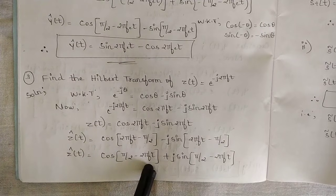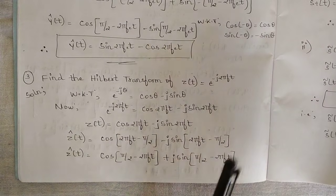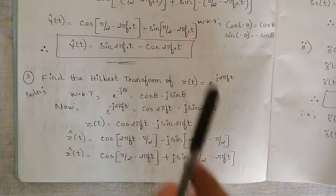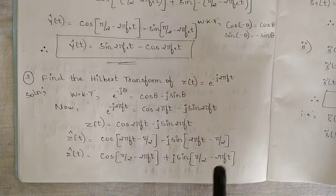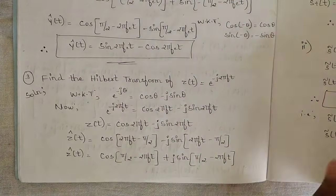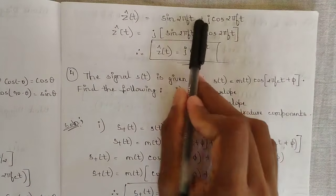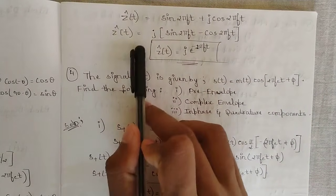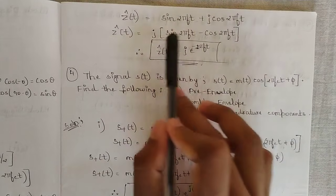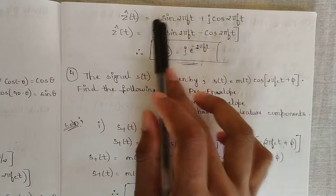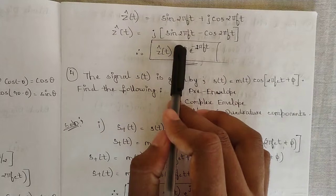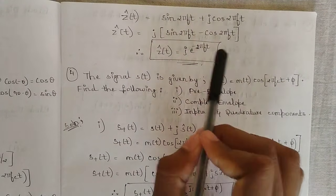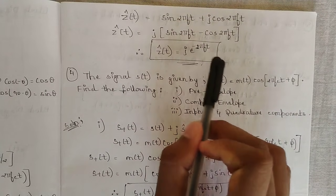The plus sign for the j-sin term arises because we have a minus sign outside and taking minus common gives minus × minus = plus. Applying cos(90° − θ) = sin θ and sin(90° − θ) = cos θ, we get sin(2πfct) + j cos(2πfct). Multiplying by j and factoring gives j·[sin(2πfct) − j cos(2πfct)] = j · e^(−j2πfct). Therefore ẑ(t) = j · e^(−j2πfct).